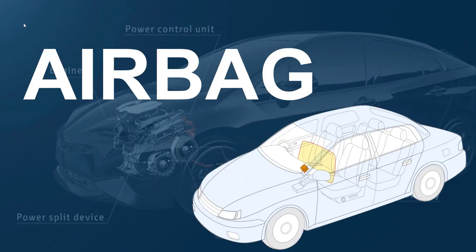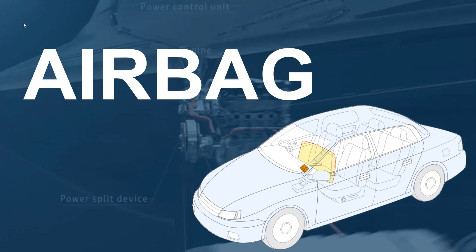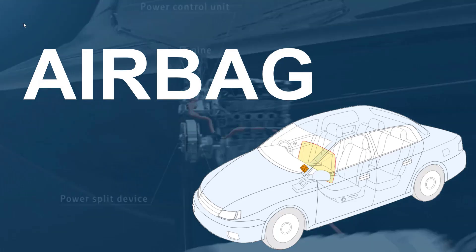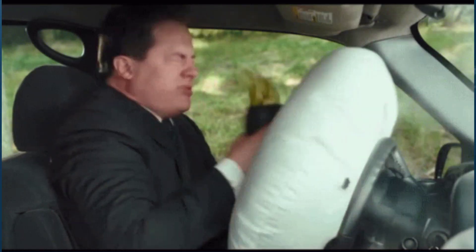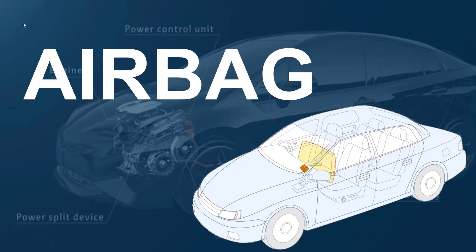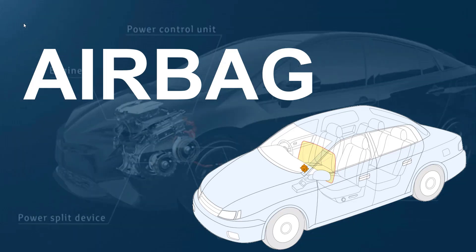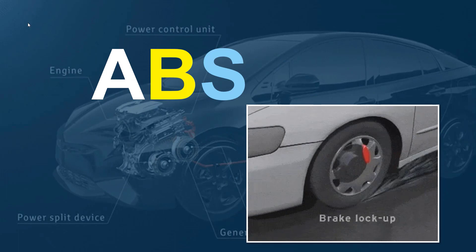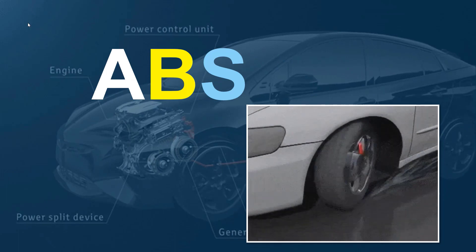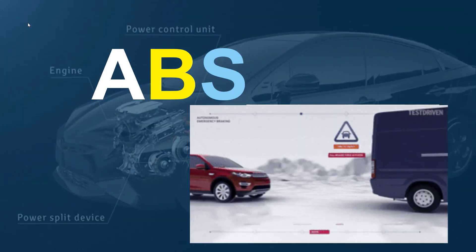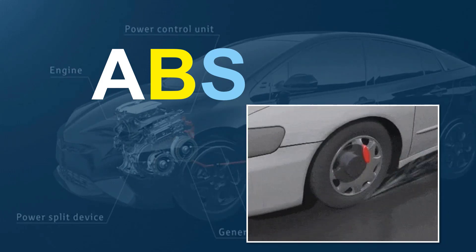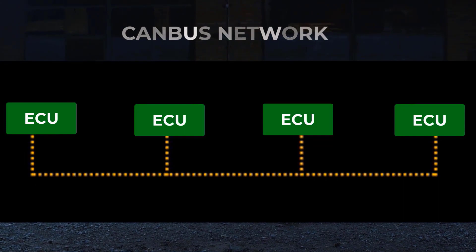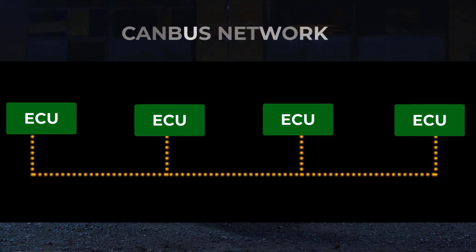The airbag control unit monitors the vehicle's airbag system, keeps track of various sensors, and triggers the airbags in the case of an accident to protect the driver or passengers. Similarly, the anti-lock braking system, called ABS, is another example of an ECU whose role is crucial for safe braking. Each node on a CAN network can both send and receive messages — just like in a group meeting, everybody can talk.